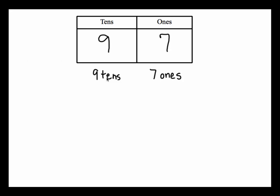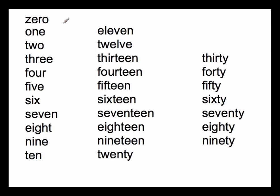So we know this is nine tens and seven ones, and this information is going to help us write the number 97 as a word, and not just using the digits that make the numerals. We have our number words listed right here. I'm going to go through them so that we can get a sense for what they actually mean.